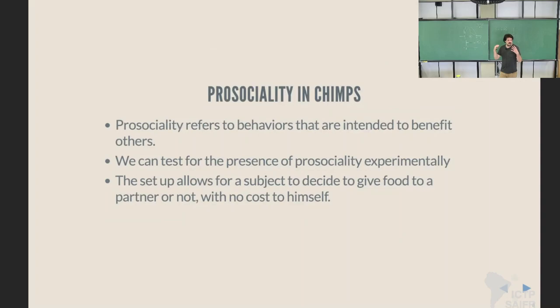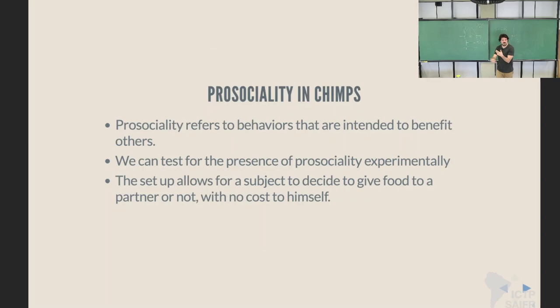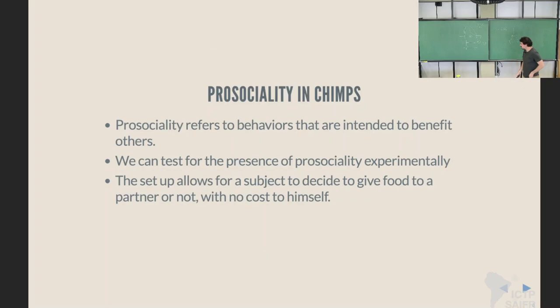Now I'm going to show you a full example of this being used in practice. This comes from the rethinking book — if you want to look at this in detail, all of the steps in building this model are there. This is an experiment to measure prosociality in chimps, assessing if chimps behave differently in prosocial settings. Prosocial behaviors are behaviors intended to benefit somebody else. This is a very controlled experiment designed to measure the effects of prosocial behavior in chimps, comparing behavior in a solitary situation to a prosocial situation with a social interaction going on.